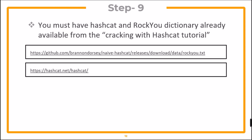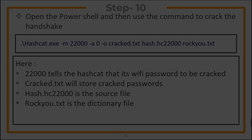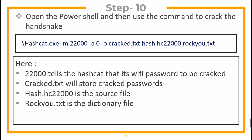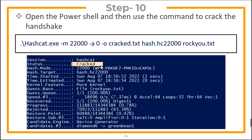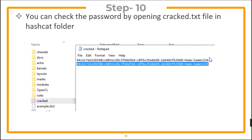You must have hashcat and your rockyou dictionary already available from the cracking with hashcat tutorial we have already covered. You can download hashcat and the rockyou dictionary from the given links. Open PowerShell while remaining in the hashcat folder and use the command to crack the handshake. The flag -m 22000 tells hashcat that Wi-Fi password data is to be cracked. crack.txt will store our cracked passwords, hash.hc22000 is our source file, and rockyou.txt is the dictionary file. Once the password is cracked, you can check it by opening crack.txt in the hashcat folder.